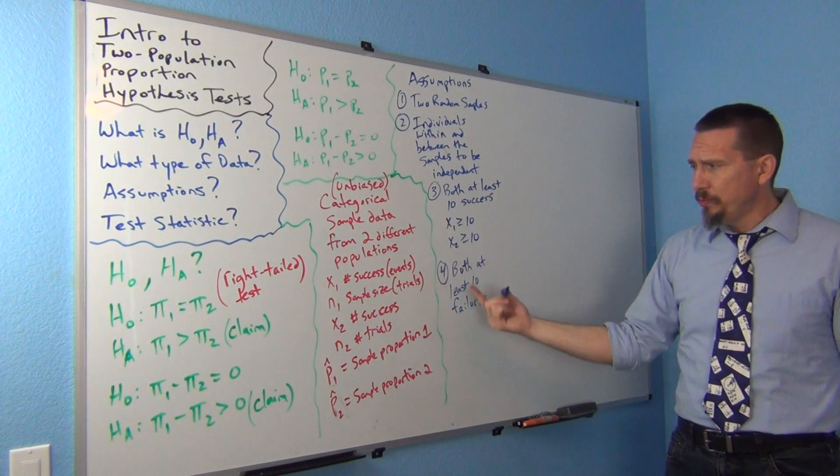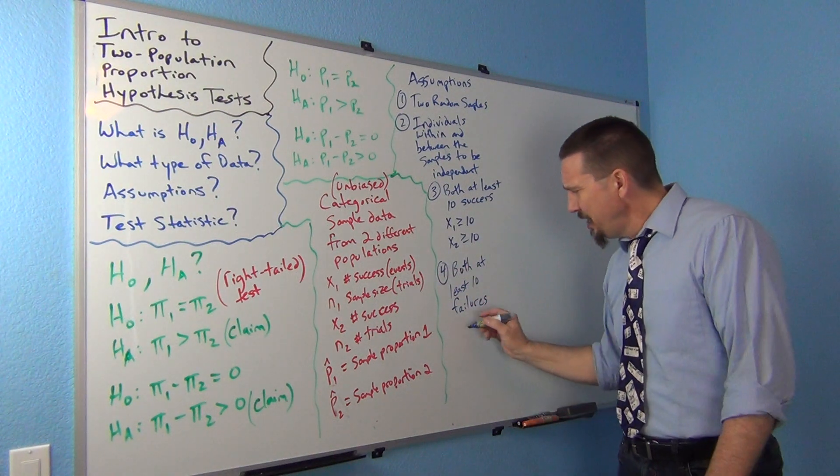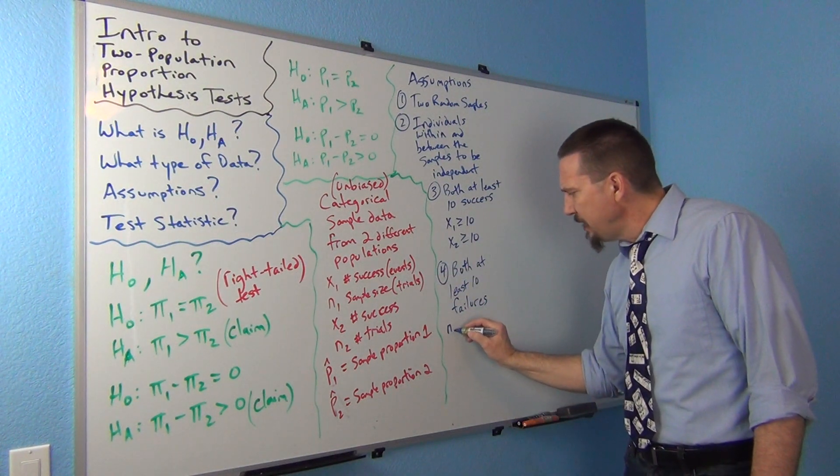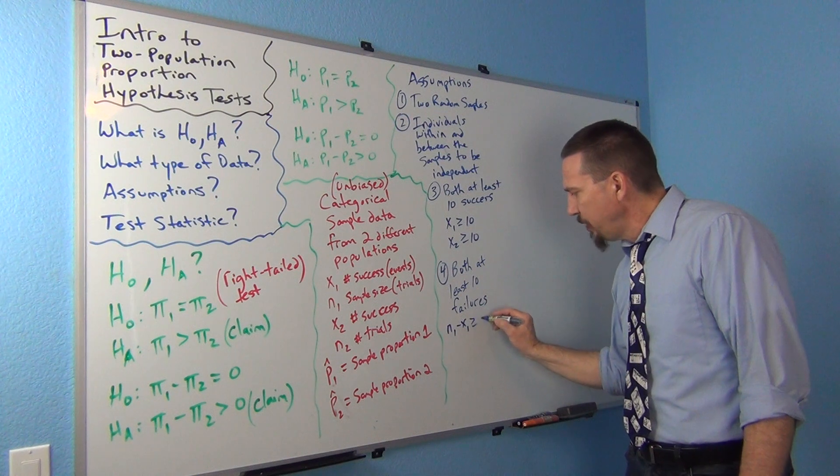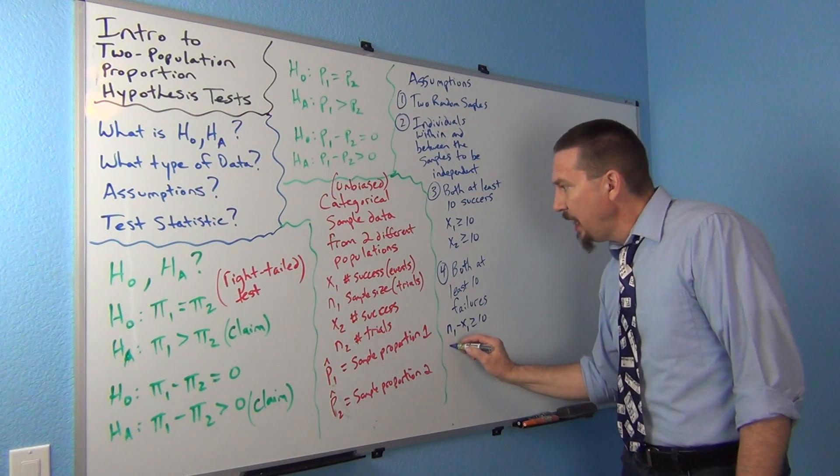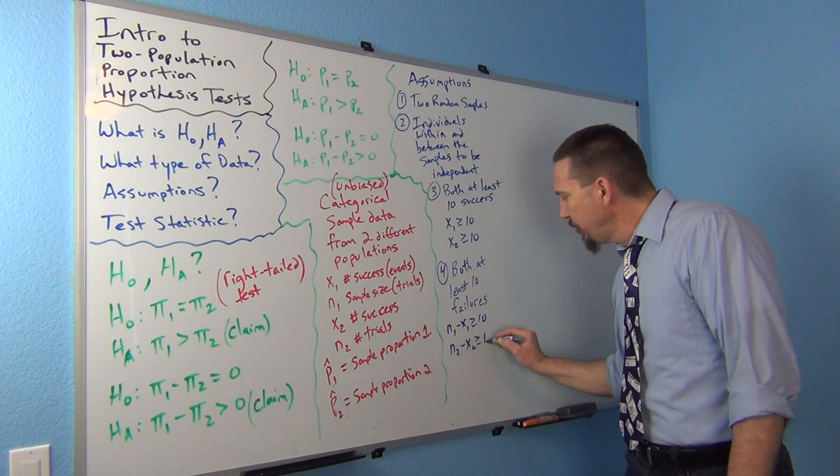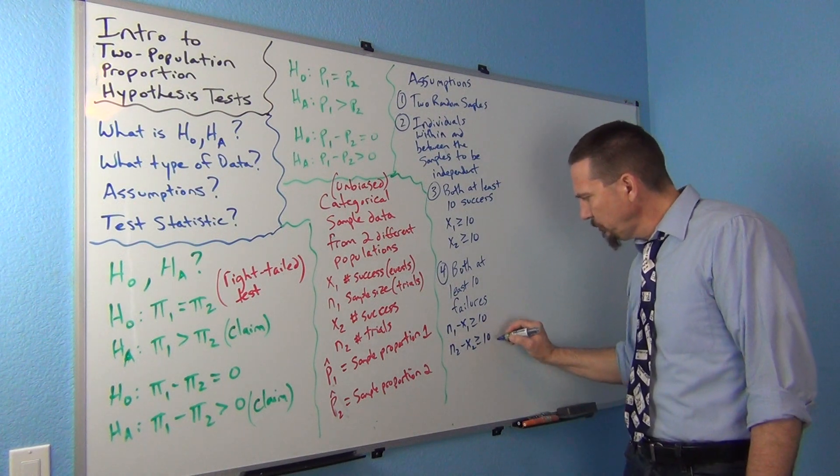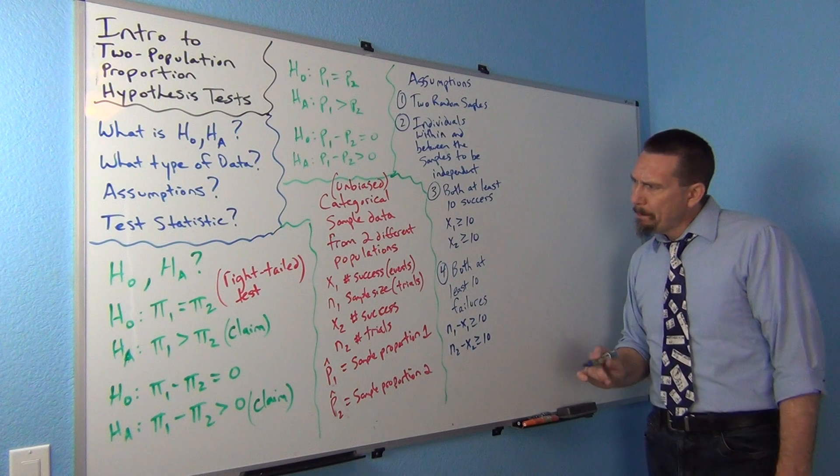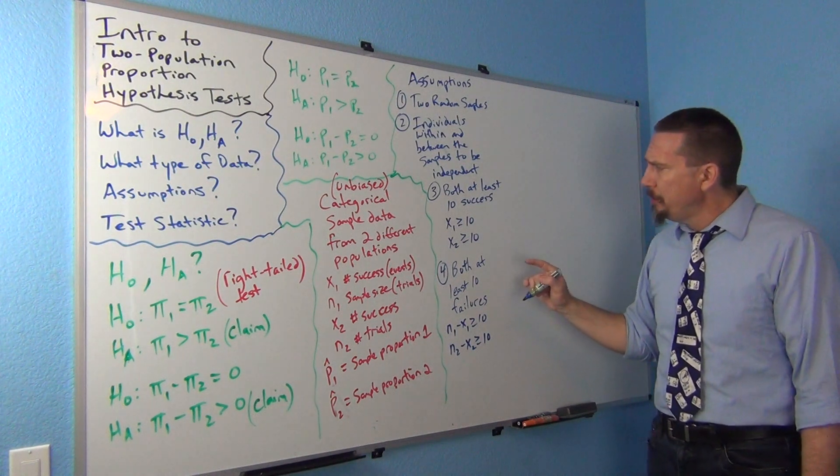All right. So if you're using the traditional symbols, usually in stat books, you'll see that as n1 minus x1 has to be greater than or equal to ten and n2 minus x2 has to be greater than or equal to ten. Again, there's other ways actually of doing this.